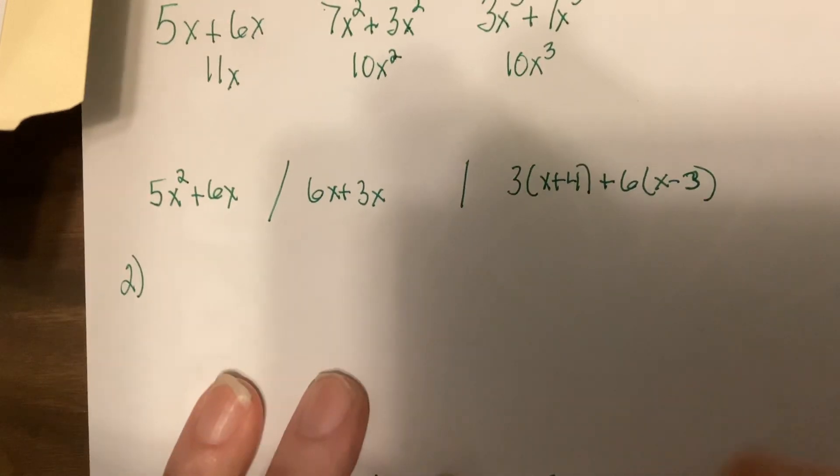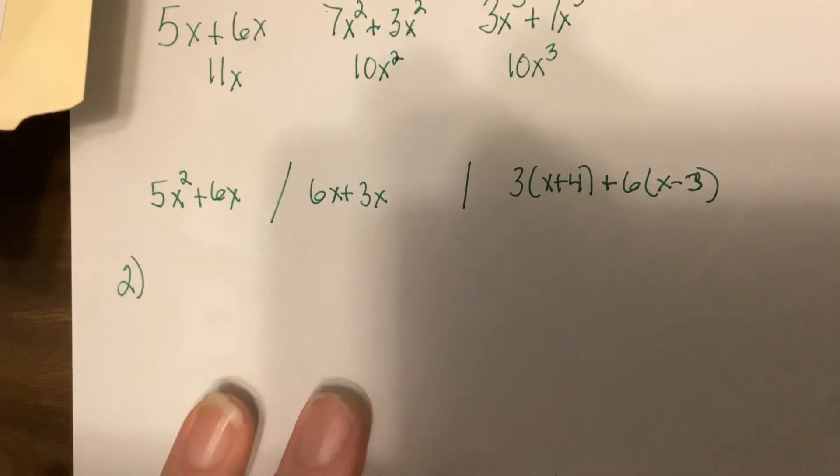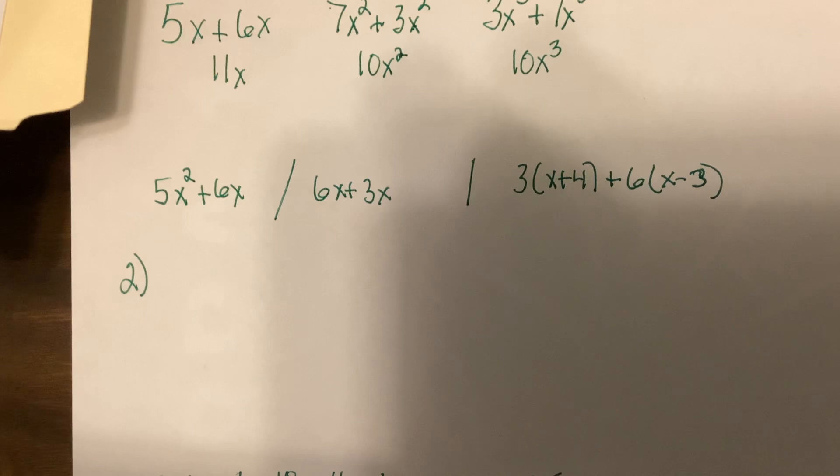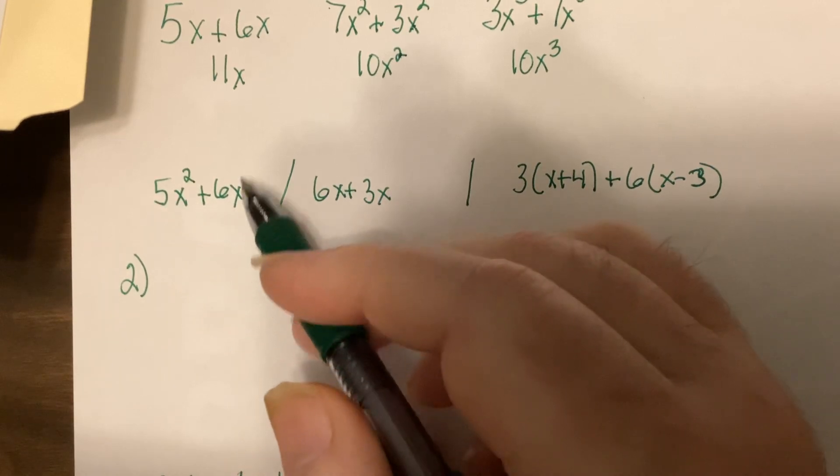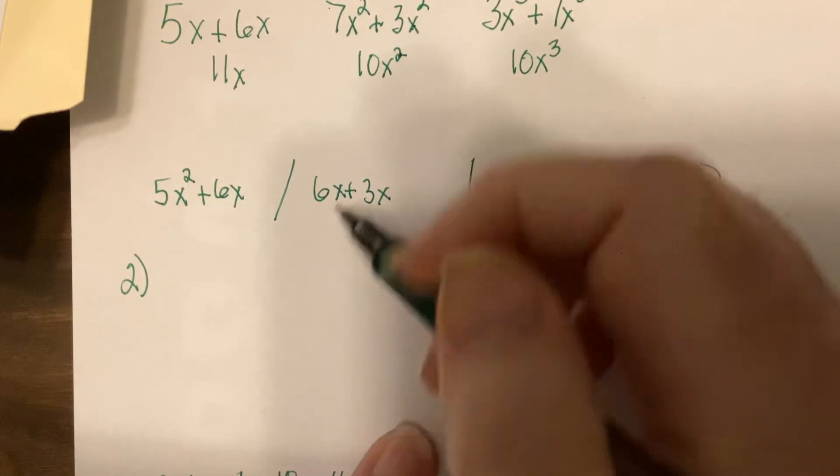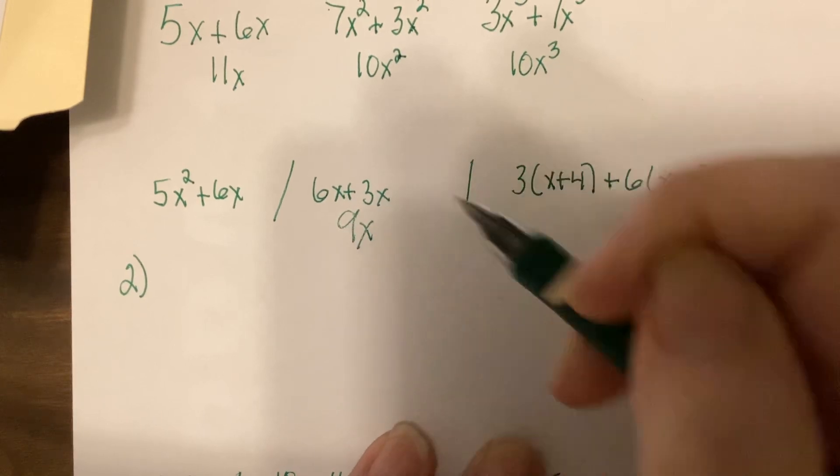So here's three problems. Go ahead and freeze the video, do them, and then turn me back on. Okay, can't do that one. Different powers. 6X plus 3X, 9X.